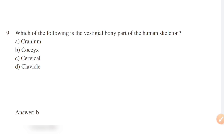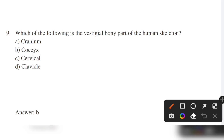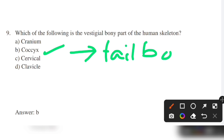Which of the following is the vestigial bony part of the human skeleton? Options: cranium, coccyx, cervical, clavicle. Answer: option B — coccyx. Coccyx is commonly called the tail bone. It is the final segment of the vertebral column in humans.